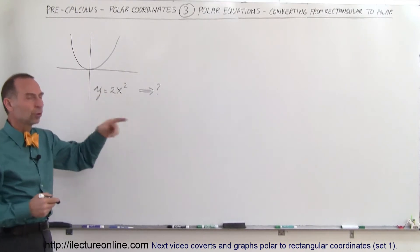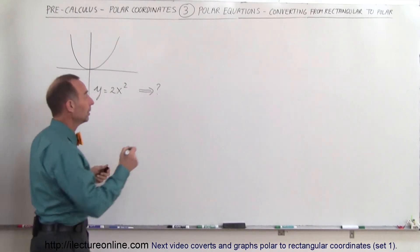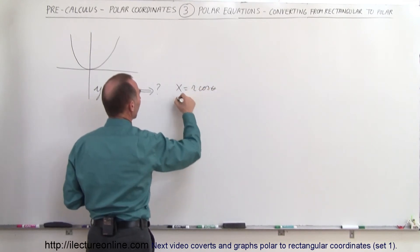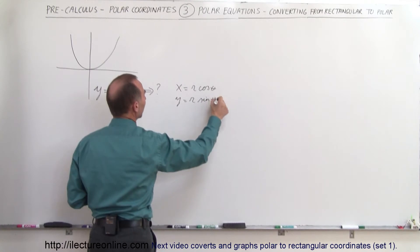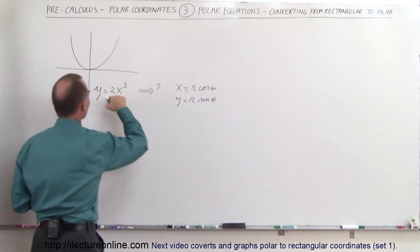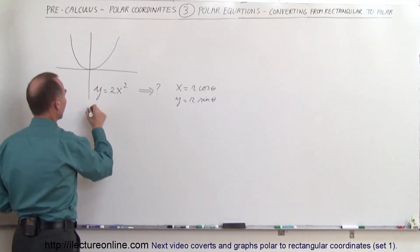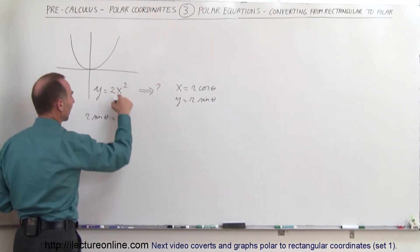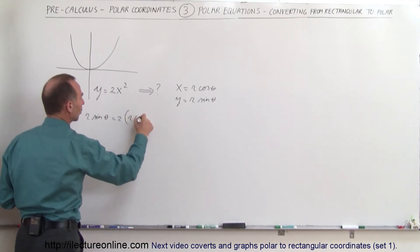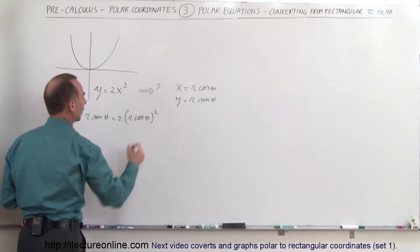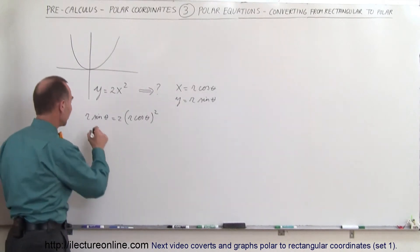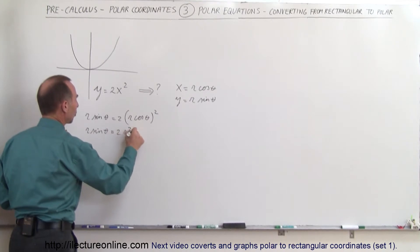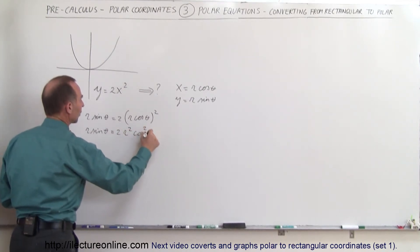So how does that convert into polar coordinates? Remember that x is equal to r times the cosine of theta, and y is equal to r times the sine of theta. If we take those two and plug them in, we get r times the sine of theta is equal to 2 times x squared, and x being r times the cosine of theta, quantity squared. So simplifying that, we get r times the sine of theta is equal to 2 times r squared times the cosine squared of theta.